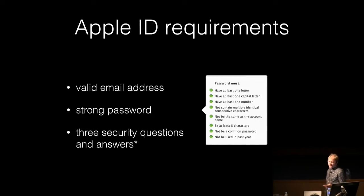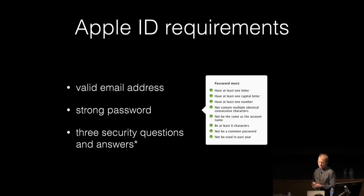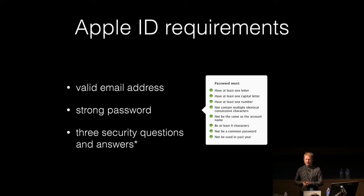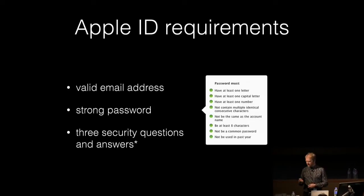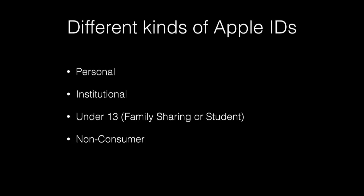You've got to use a valid email address for an Apple ID. In the old days of the developer connection, you could use a text username, but now they require a valid email address and there are strict password requirements. When you set up, you've got to provide answers to three security questions, and they can be removed if you enable two-step authentication. There are four main kinds of Apple IDs — I'm going to focus on the primary ones we're going to interact with in our roles.